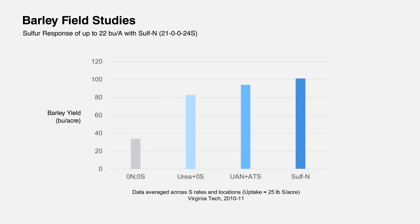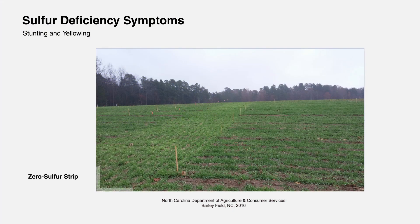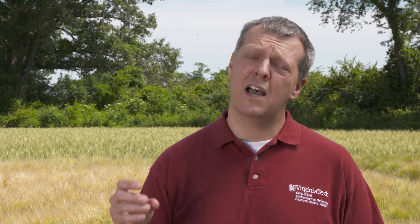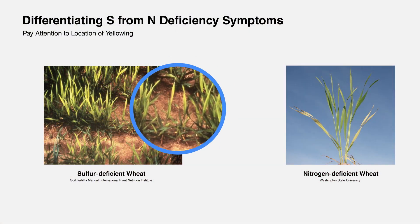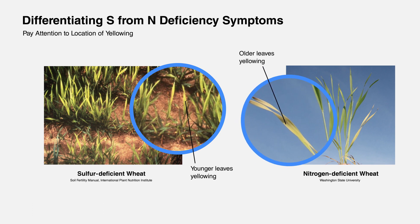Sulfur deficiency in wheat is often confused by farmers for nitrogen deficiency, but there are some key differences. If you're just looking at the field overall, the field may look very pale yellow and the plants would be pretty spindly. But if you look closer, the sulfur in the plant does not move very readily. So what'll happen is the older leaves will stay green and the new growth will be yellow. Whereas in nitrogen deficiency, the nitrogen can move in the plant, so the older leaves will turn yellow and the new leaves turn green.